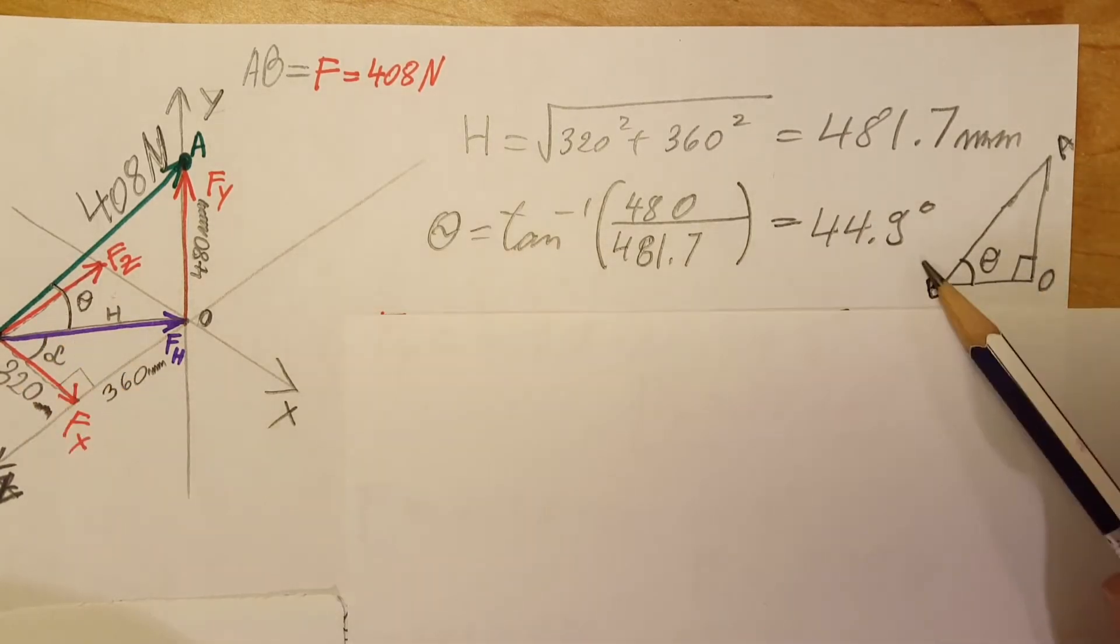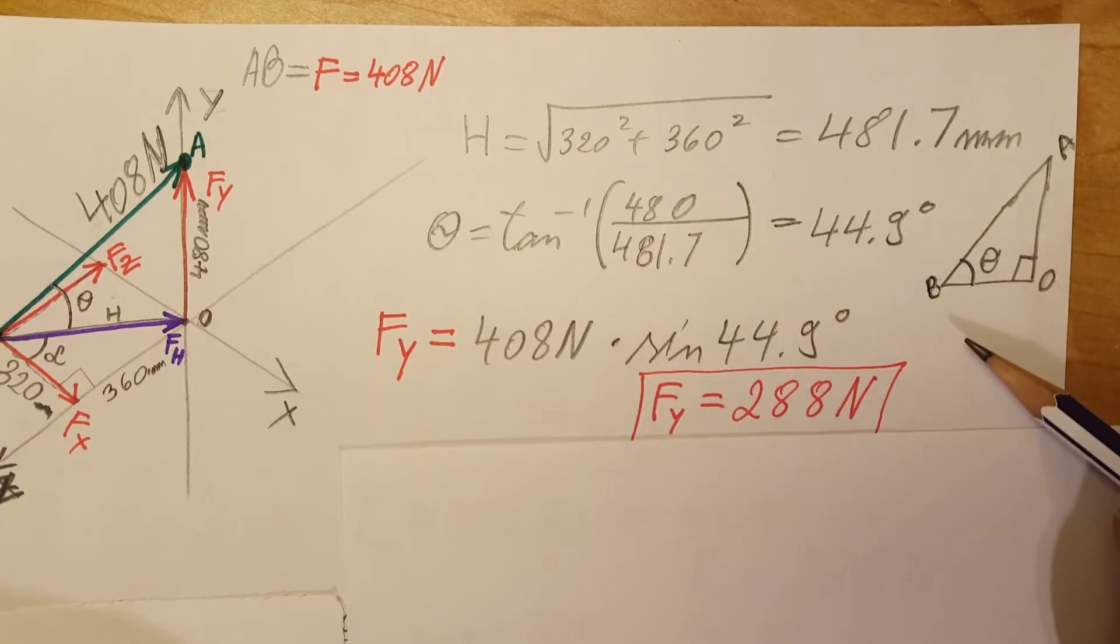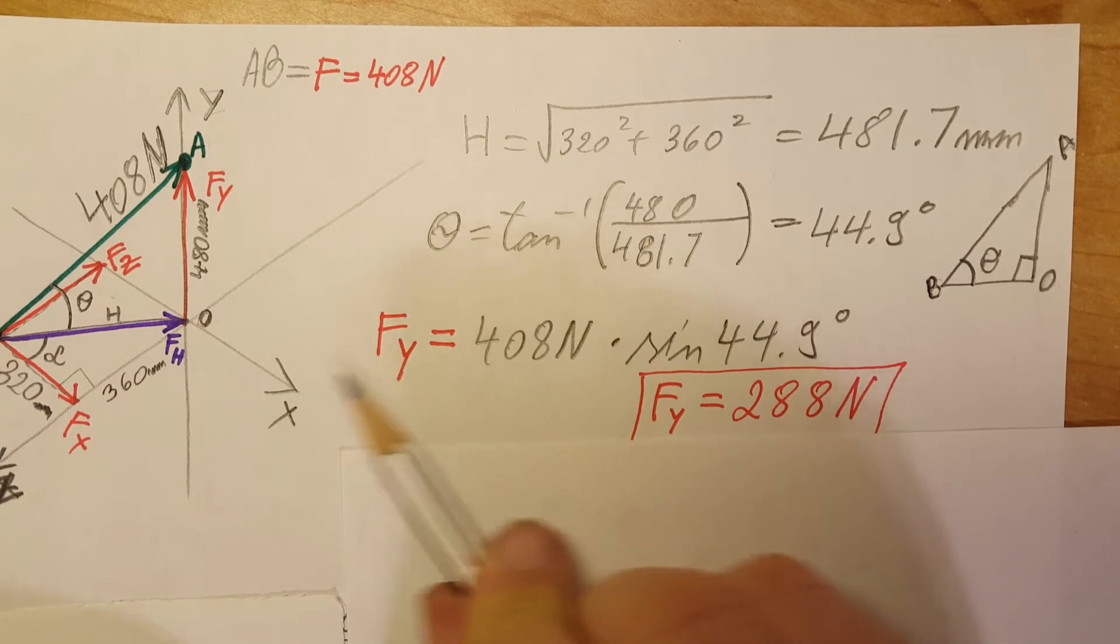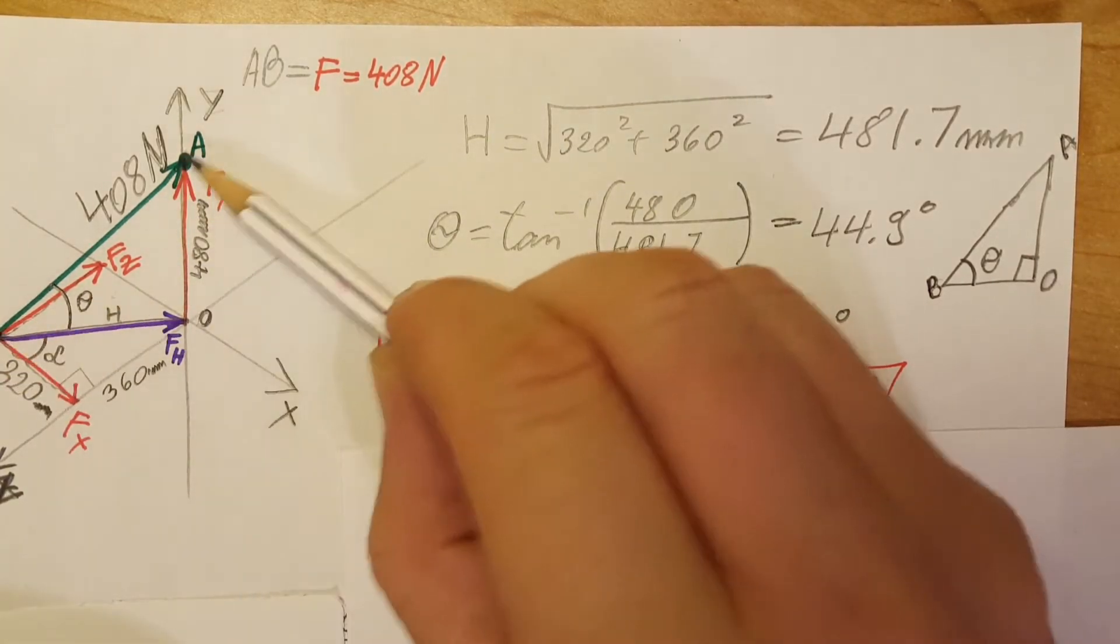Now we're going to continue, and we can see that from the same triangle we are able to find the first component of our force. This is force AB, but I'm just going to call it F for simplicity, and it's equal to 408 newtons.